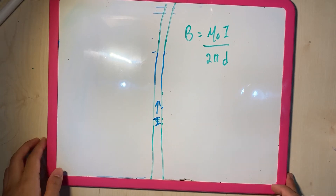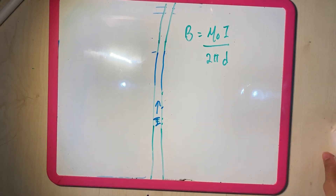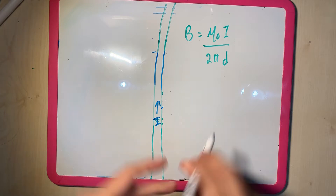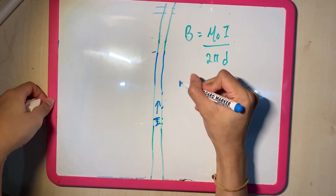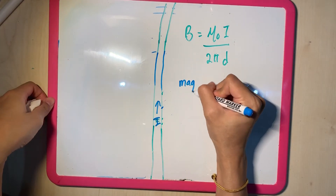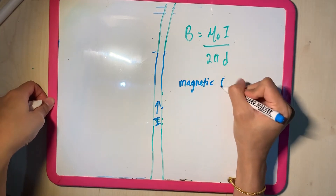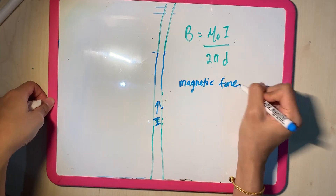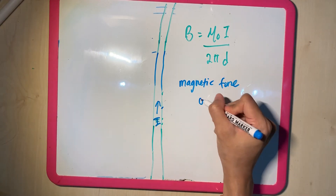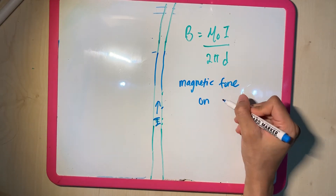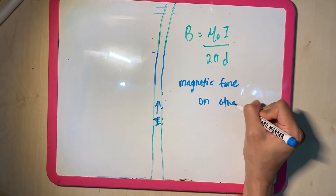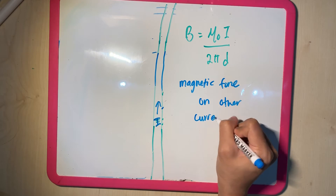Now that we know what a straight wire carrying current does — it produces a magnetic field — it also produces a magnetic force on other current-carrying conductors.